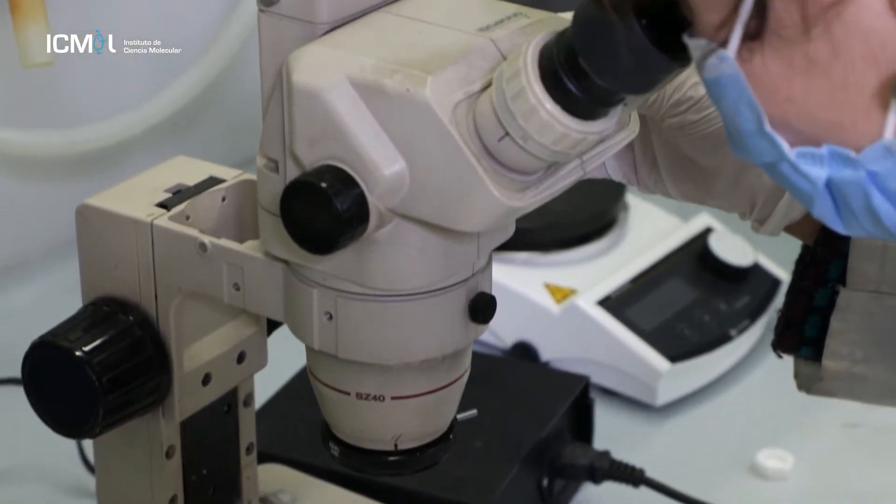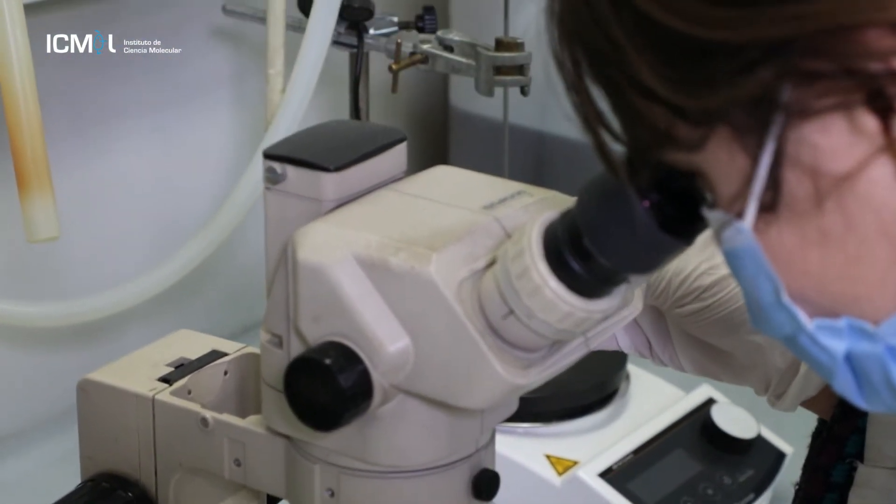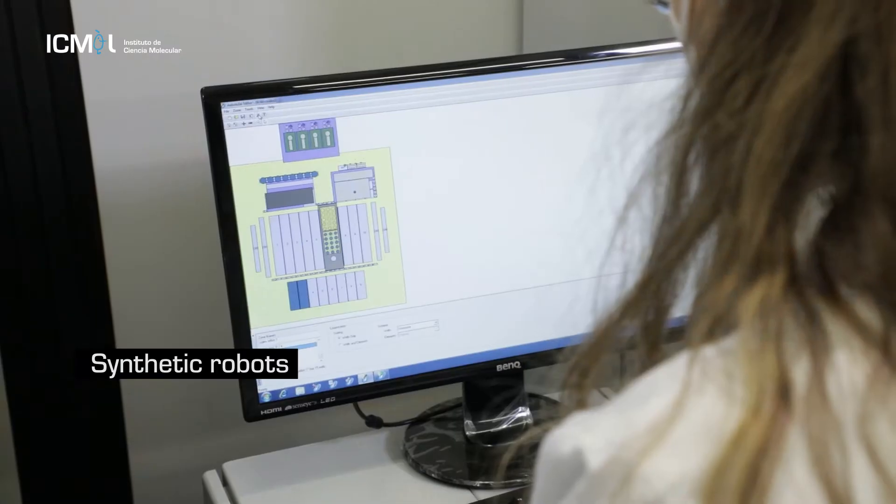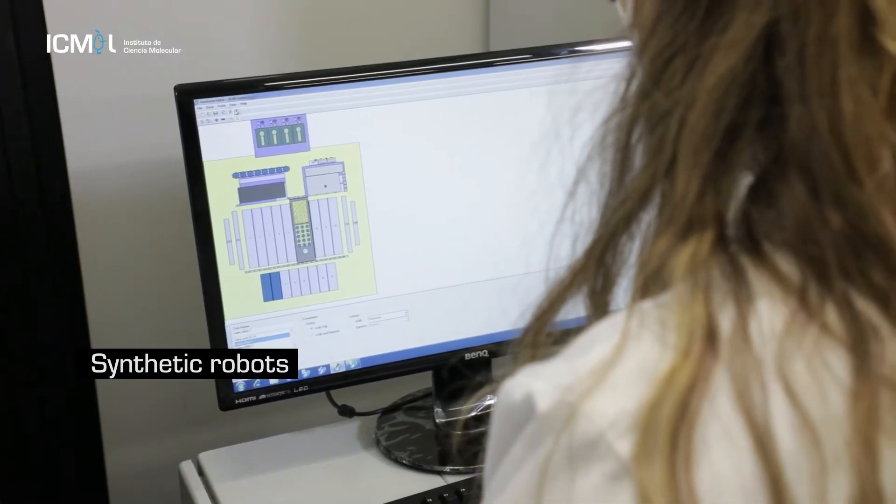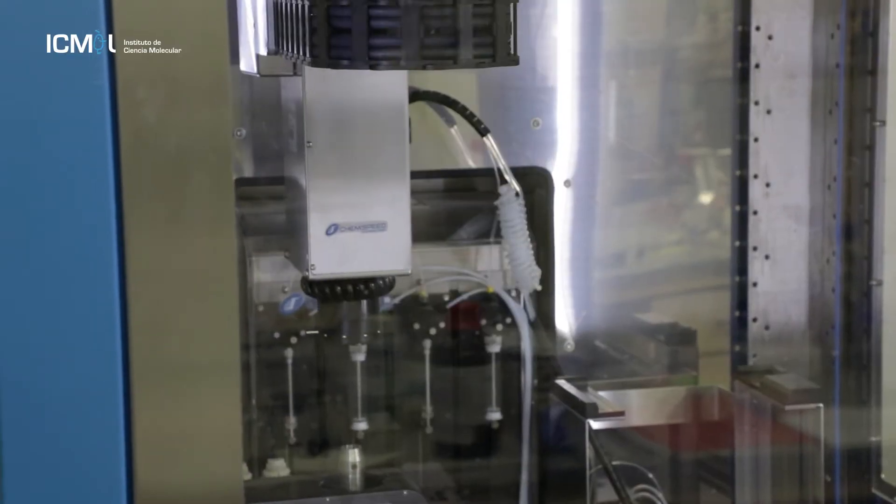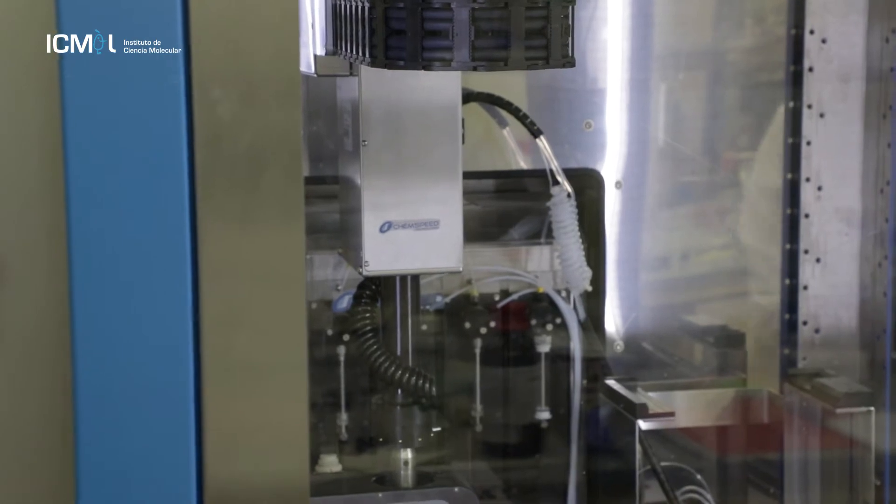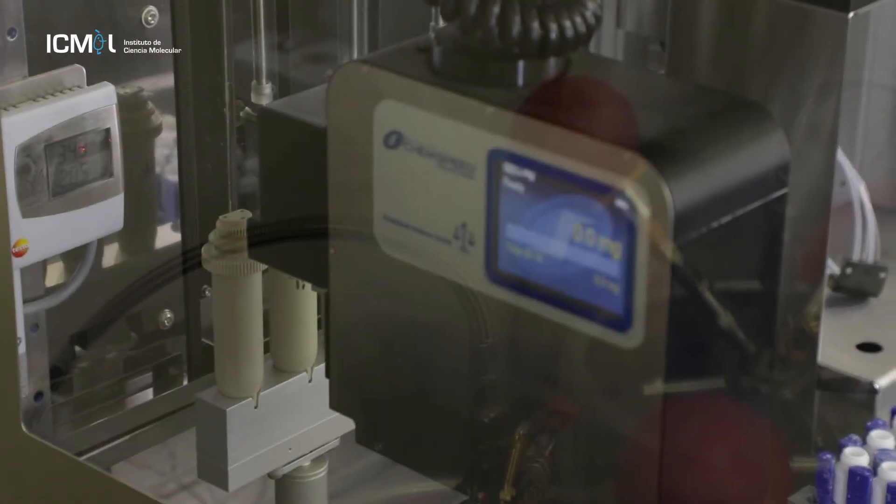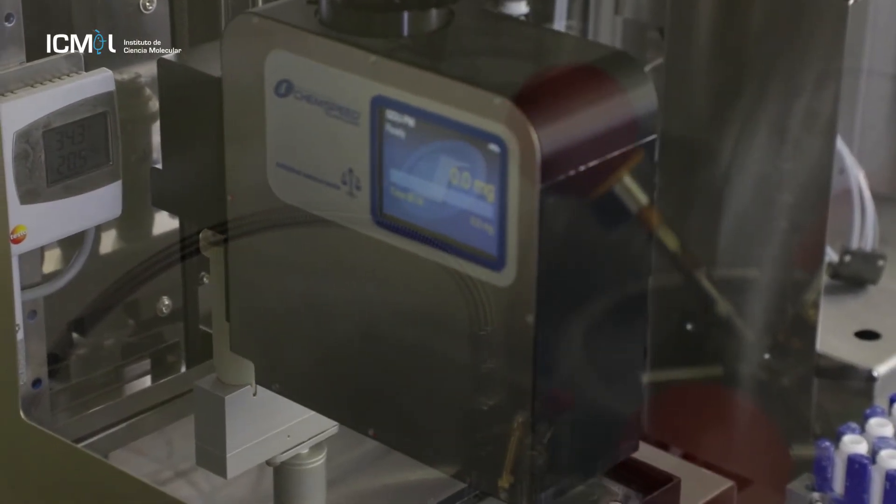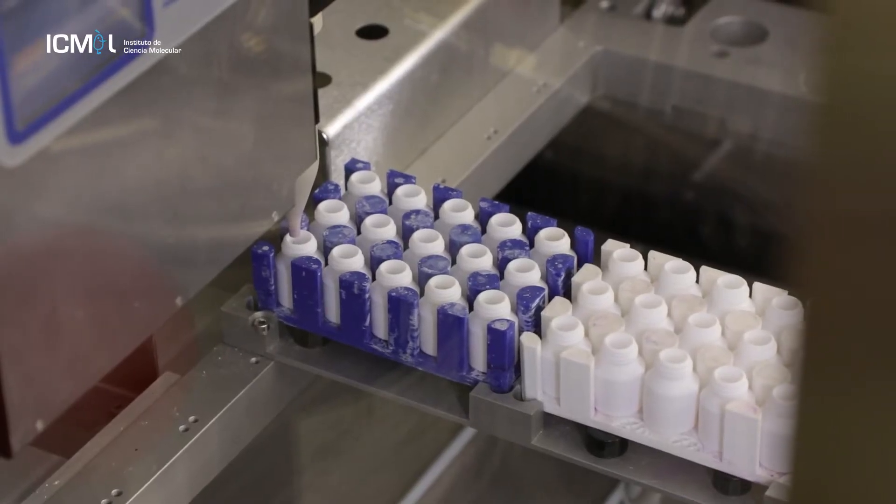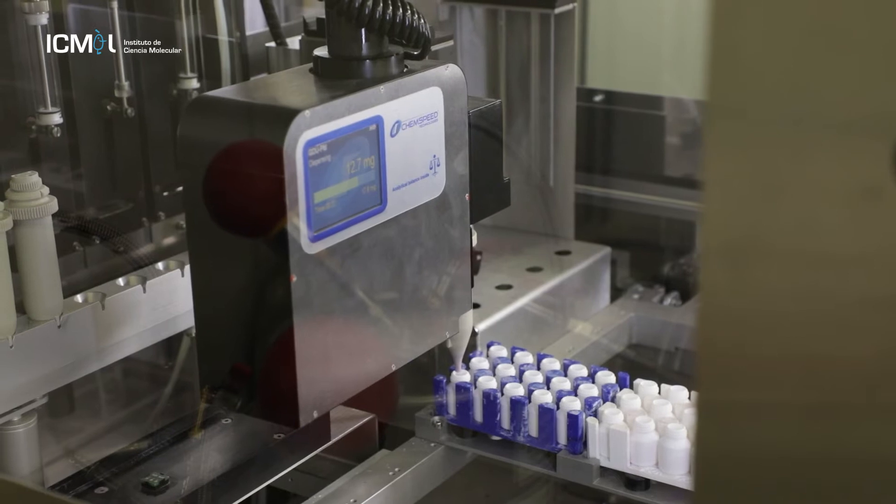So in my group we are using an alternative approach that relies on the use of synthetic robots like this one. This machine, which is quite expensive unfortunately, enables the systematic exploration of the chemical space by automated dosing of solids and liquids. In this way we can design multiple reactions at the same time and implement them in rounds of experiments that are then analyzed in parallel.